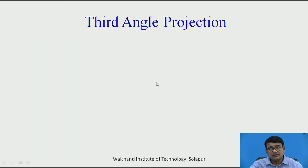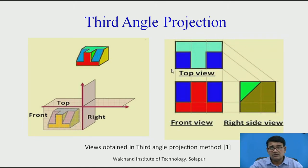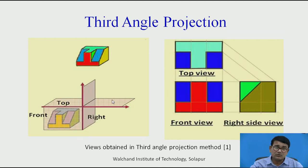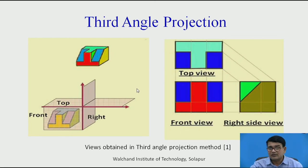Now moving to the third angle projection method: in this method, the object is placed in the third quadrant. The basic difference between the first angle and third angle projection methods is that in the first angle method the object is in the first quadrant — front view above and top view below the reference line. But in the third angle method, the object is in the third quadrant, so the front view is below the reference line and the top view is above the reference line.